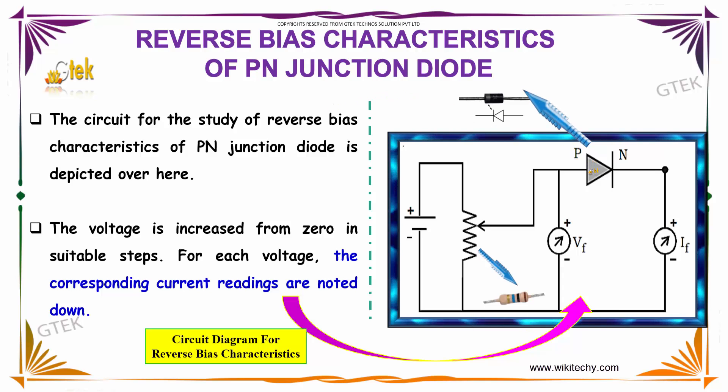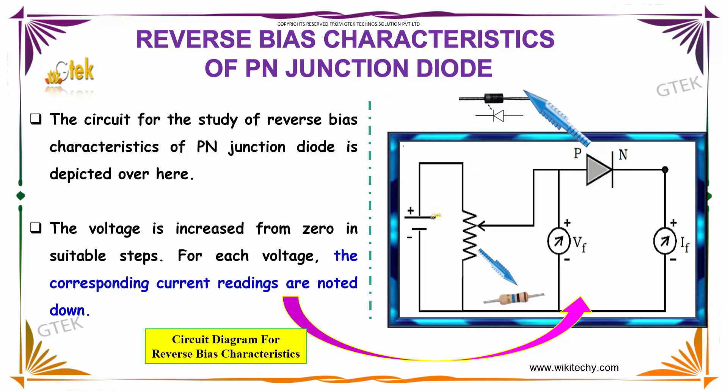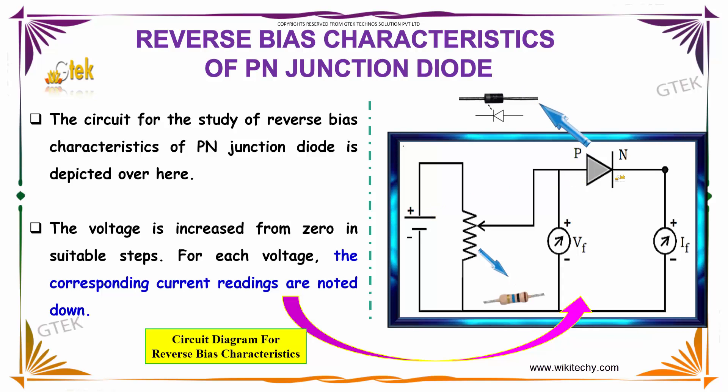In reverse bias, the positive terminal is connected to the negative side of the diode, and the negative terminal is connected to the positive side.